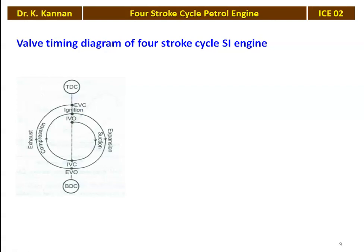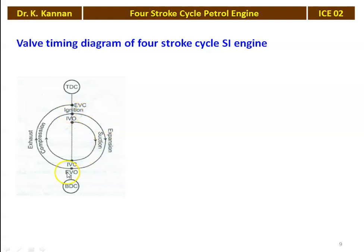Now, the valve timing diagram of the four-stroke cycle SI engine. The piston moves from TDC to BDC. Looking at the diagram: first revolution, second revolution — two revolutions total. First stroke: TDC to BDC; second stroke: BDC to TDC; third stroke: TDC to BDC; fourth stroke: BDC to TDC. Four strokes and two revolutions of the crankshaft.